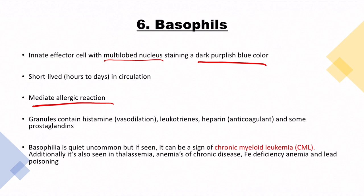Basophils have a multi-lobed nucleus and stain a dark purplish-blue color. They mediate allergic reactions and are very short-lived. The granules of basophils consist of histamine (causing vasodilation), leukotrienes, heparin (an anticoagulant), and some prostaglandins. A note on terminology: '-philia' means increased number of cells and '-penia' means decreased number of cells. So basophilia means increased basophils; eosinophilia means increased eosinophils; neutropenia means decreased neutrophils.